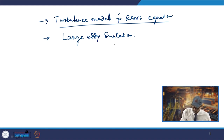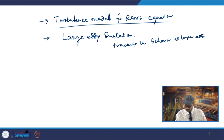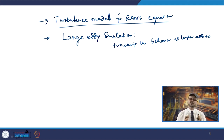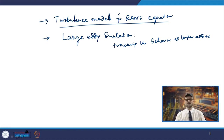In LES, you perform space filtering of the unsteady Navier-Stokes equations. Prior to computation you apply space filtration — the large eddies are passed through and the smaller eddies are rejected. Then these smaller eddies are also included using subgrid scale modeling.